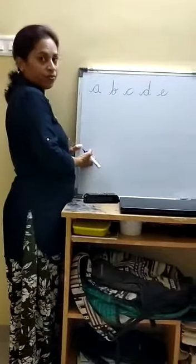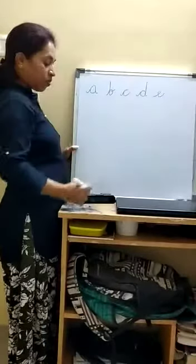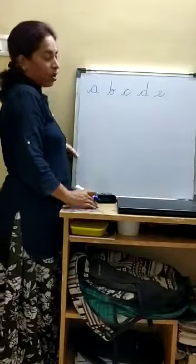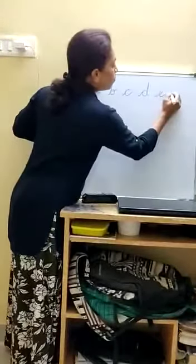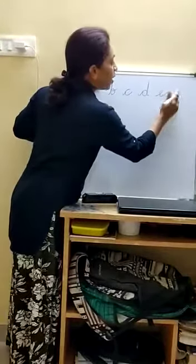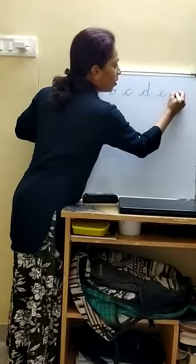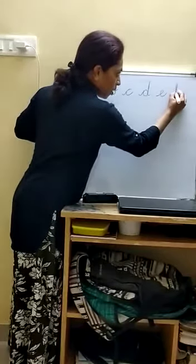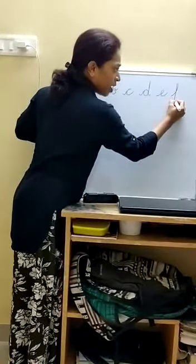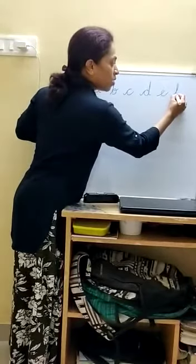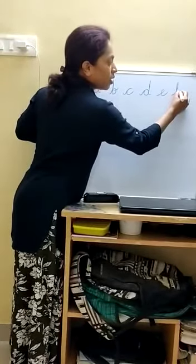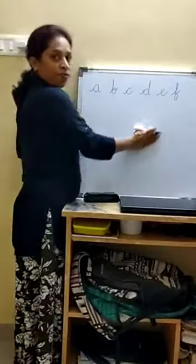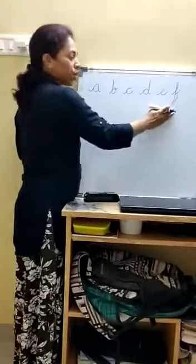Next letter is F. Name of the letter is F. Sound of the letter is F. How to write? Starting from the third line, go to the first line, come down in a straight line, take a small curve, and then tail. F. Fan. F. Fish.